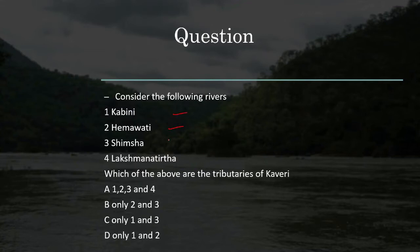Hemavati, Shimsa, Lakshman Tirtha — all four of these are tributaries of the Kaveri river. So you should remember this fact.